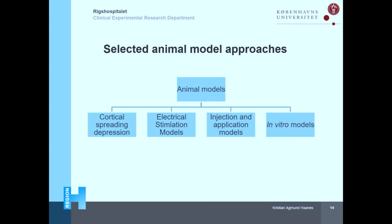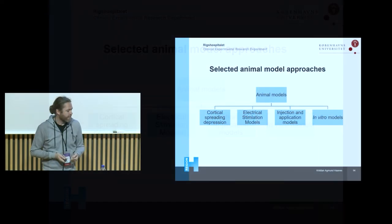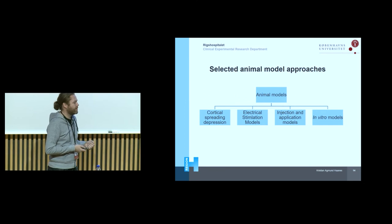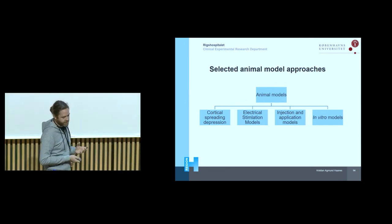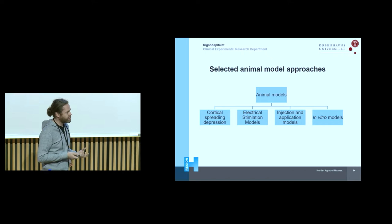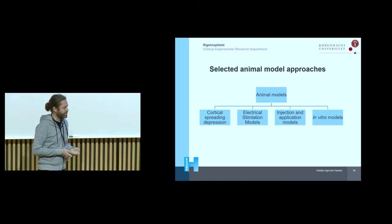I chose some animal models to discuss and see what we know about the vascular involvement in these models. These are: cortical spreading depression, electrical stimulation, injection and application models, and also some in vitro models.